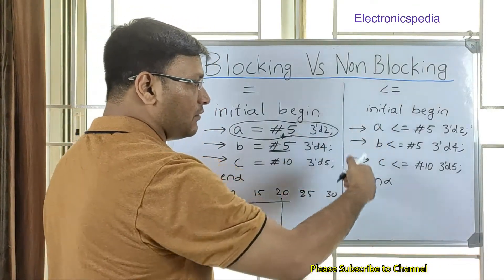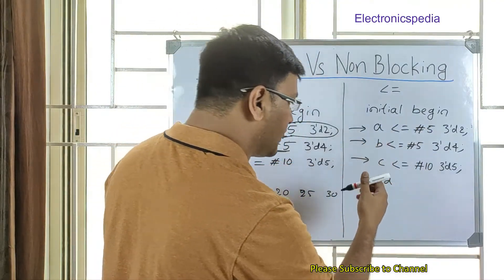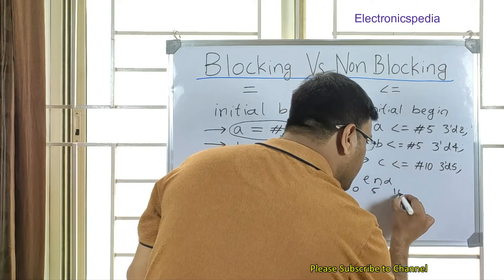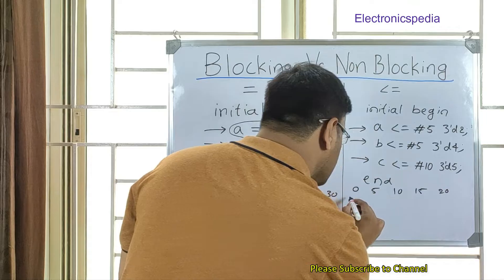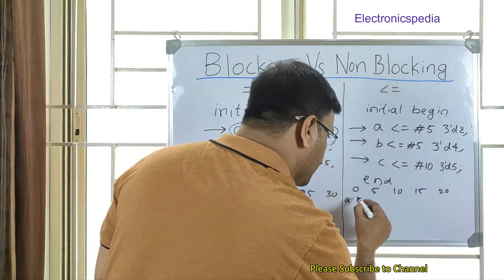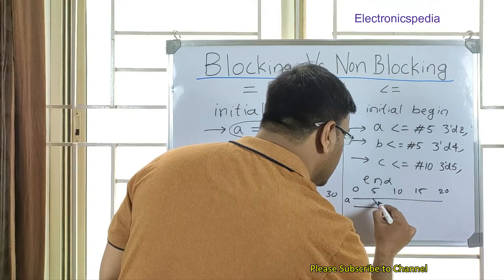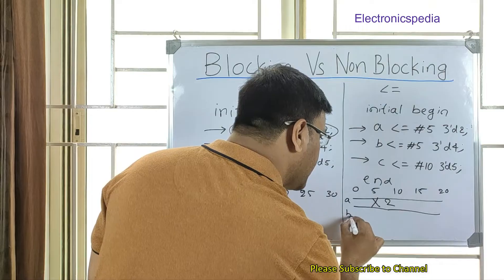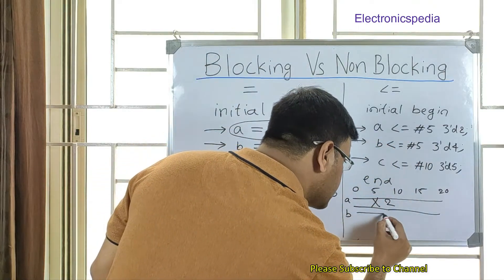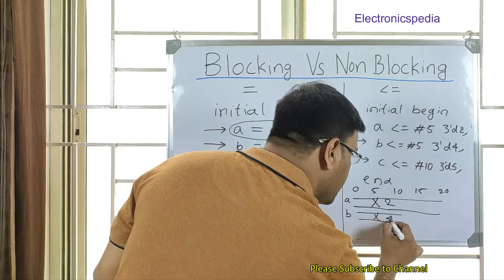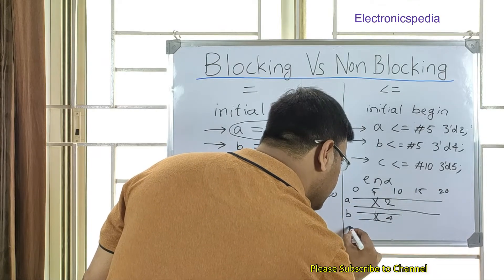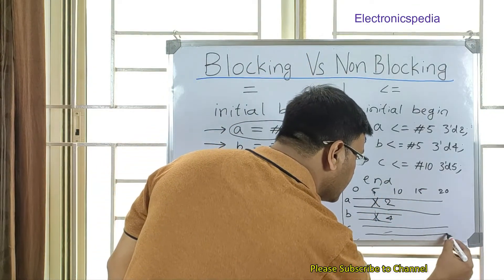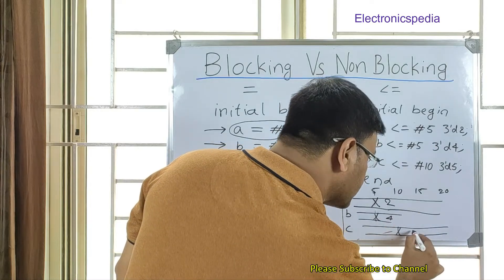Now for the non-blocking statements, all of these get executed in parallel. So the timeline is 0, 5, 10, 15, 20. Since they all start at time 0 in parallel: A gets value 2 after 5 nanoseconds, B gets value 4 after 5 nanoseconds, and C gets value 5 after 10 nanoseconds.